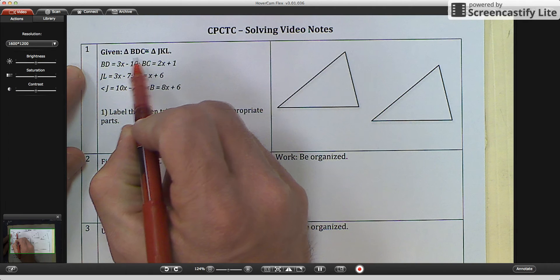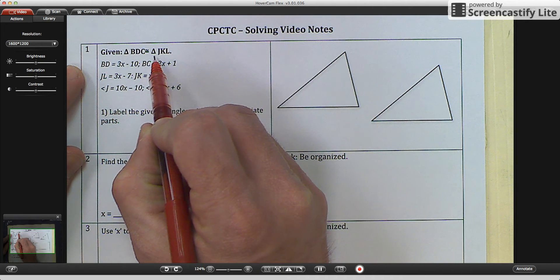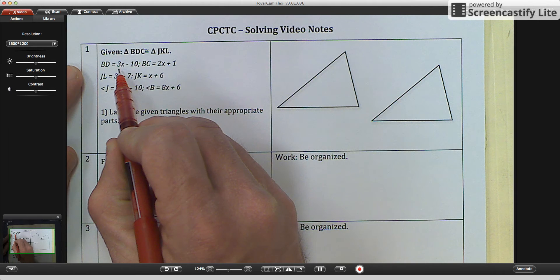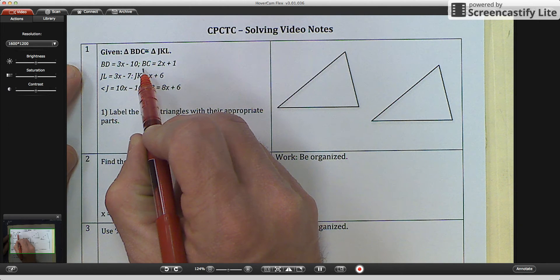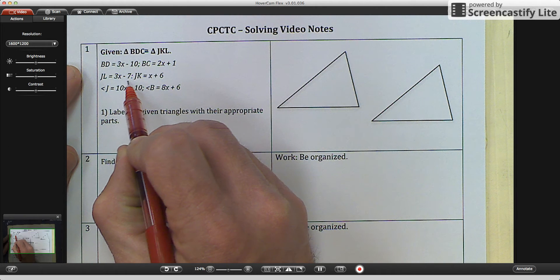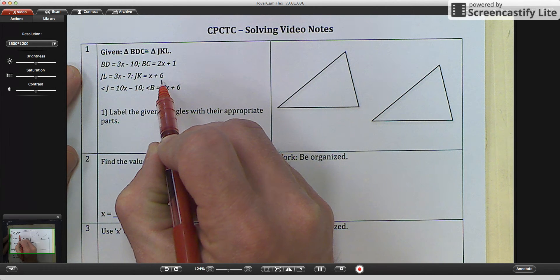It says, given triangle BDC is congruent to triangle JKL, and then it says BD equals 3X minus 10, BC equals 2X plus 1, JL equals 3X minus 7, and JK equals X plus 6.